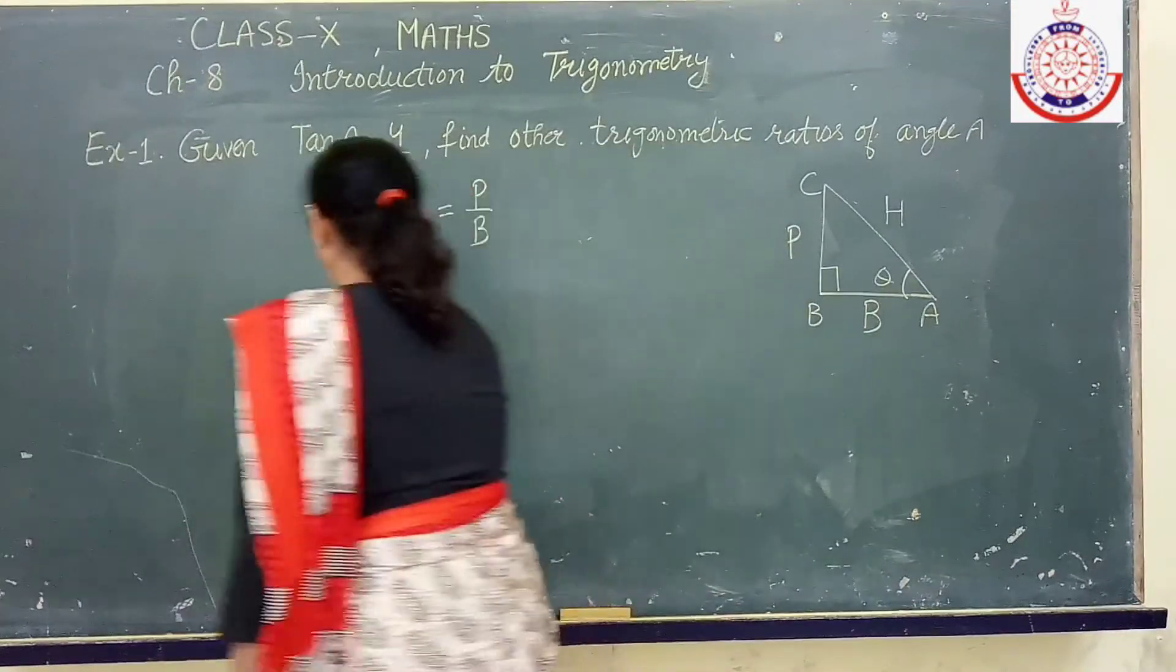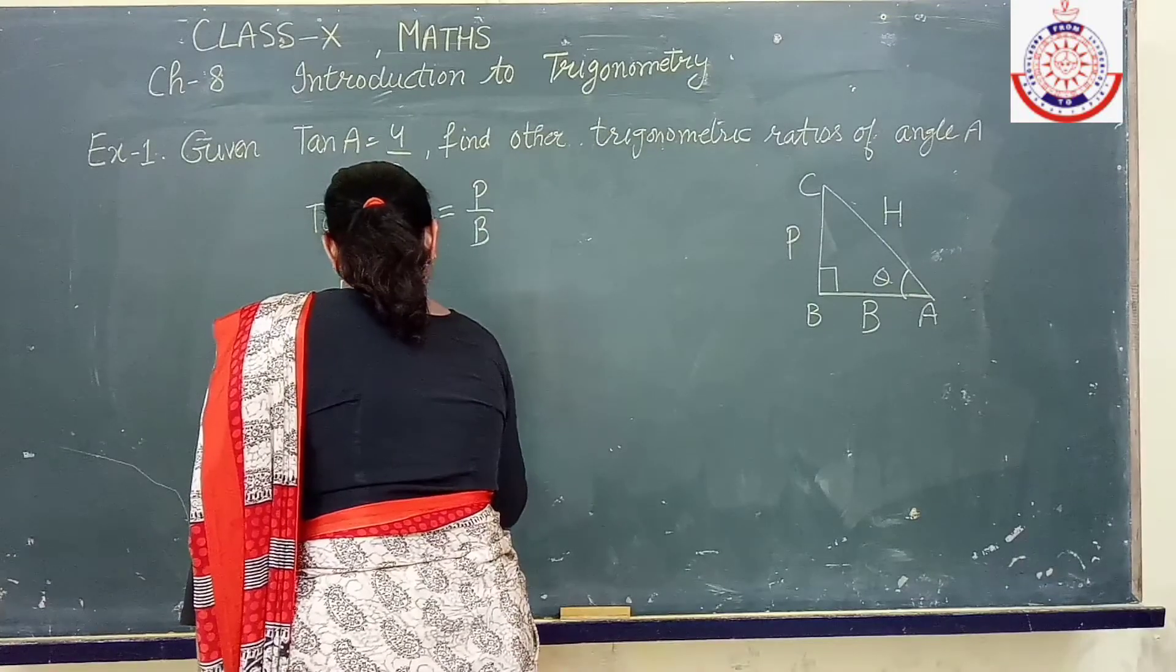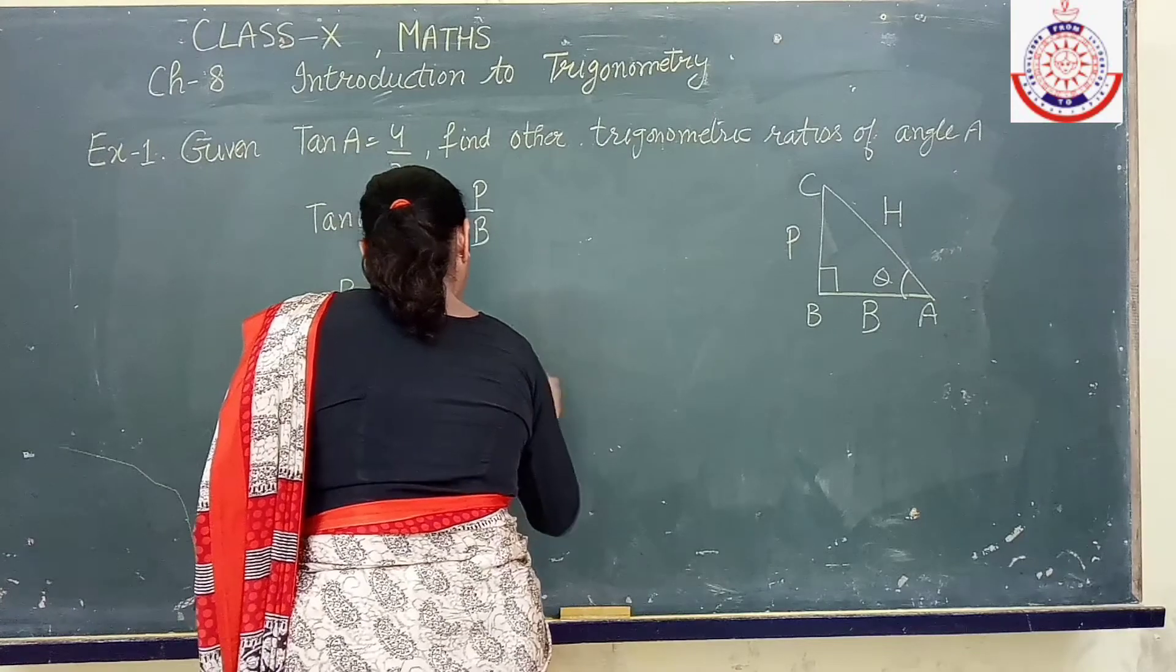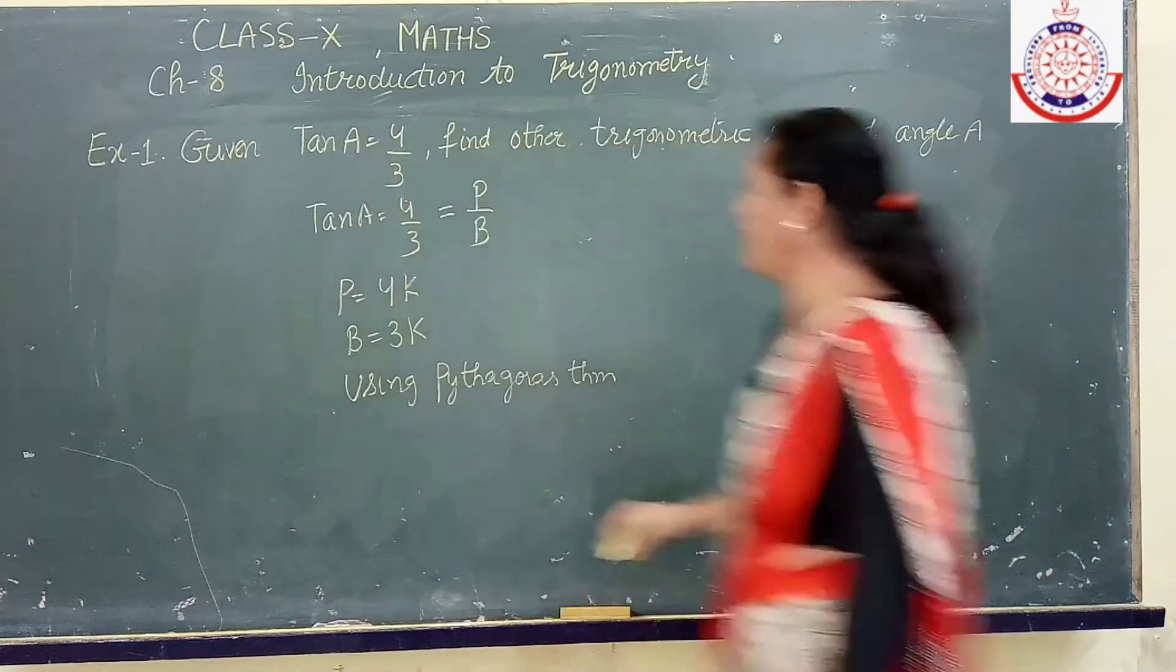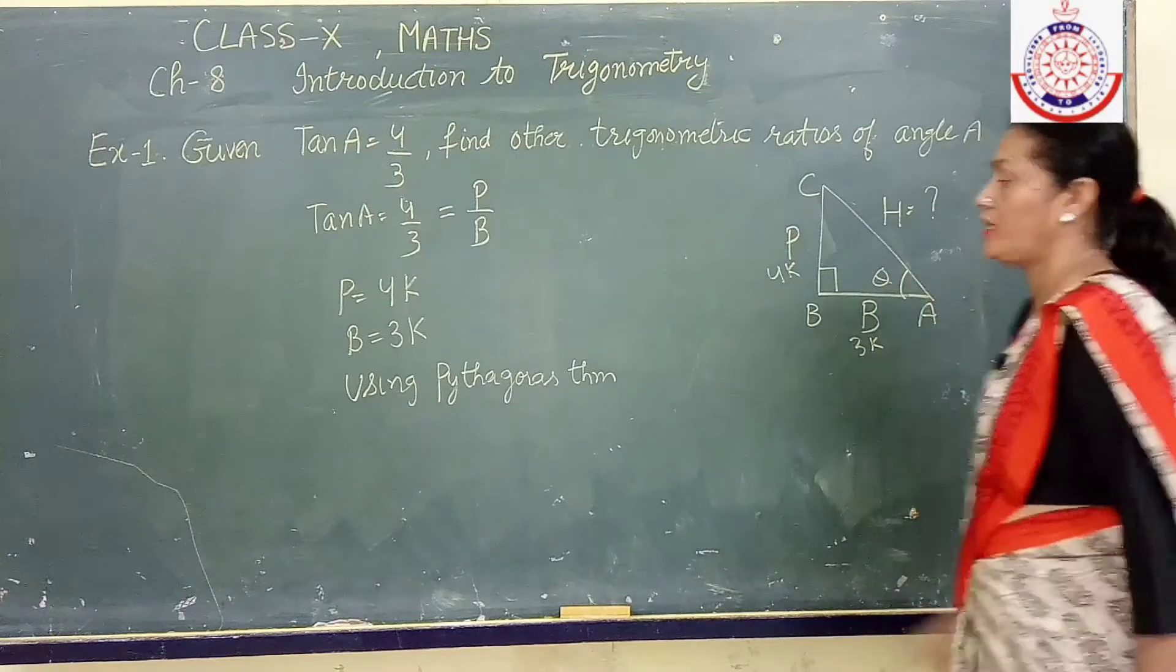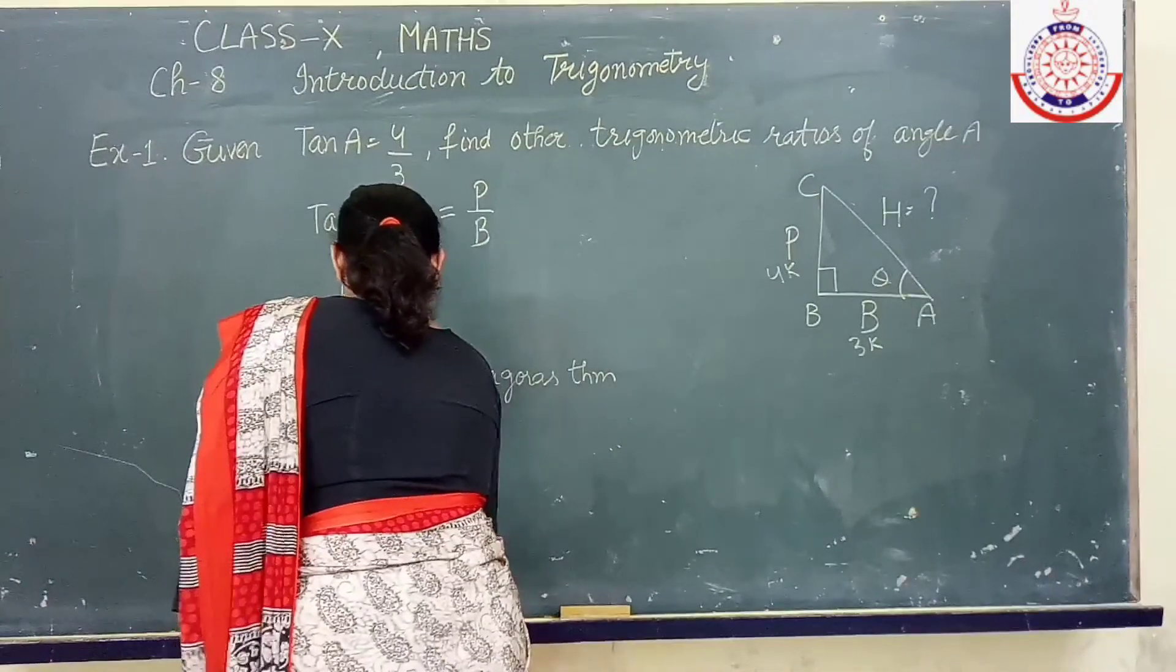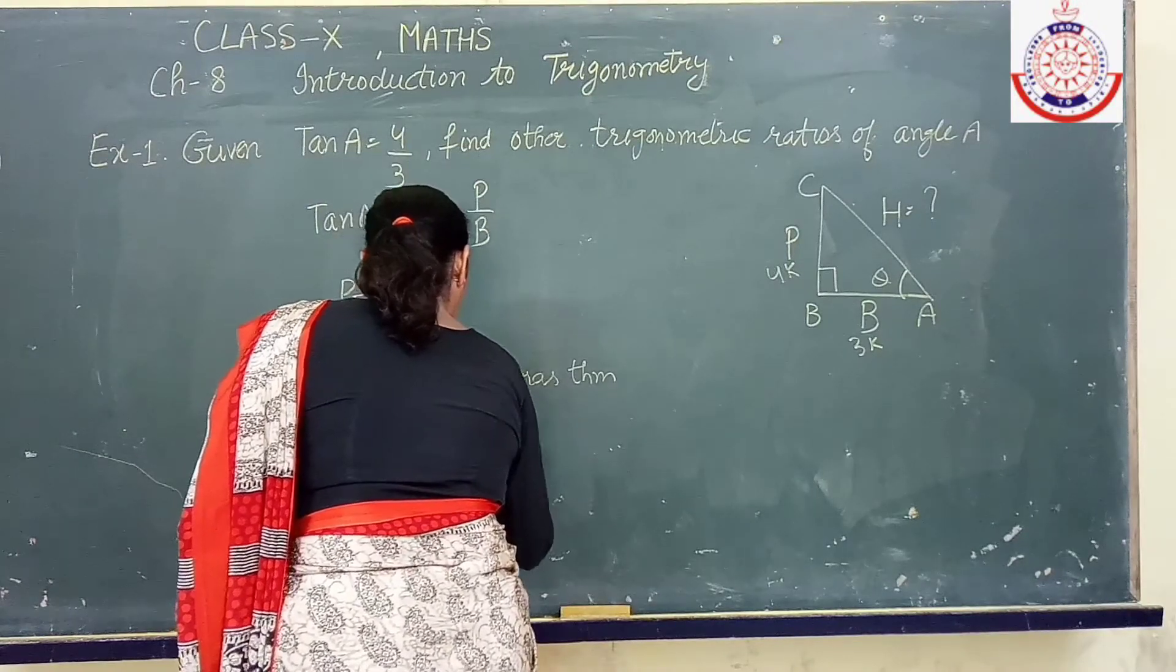Now using Pythagoras theorem. We are having perpendicular as 4k, base as 3k. So according to Pythagoras theorem, hypotenuse square is equal to perpendicular square plus base square. So that means 4k whole square plus 3k whole square.